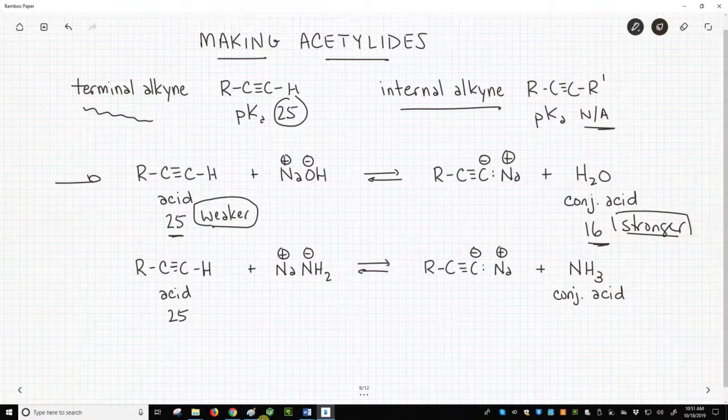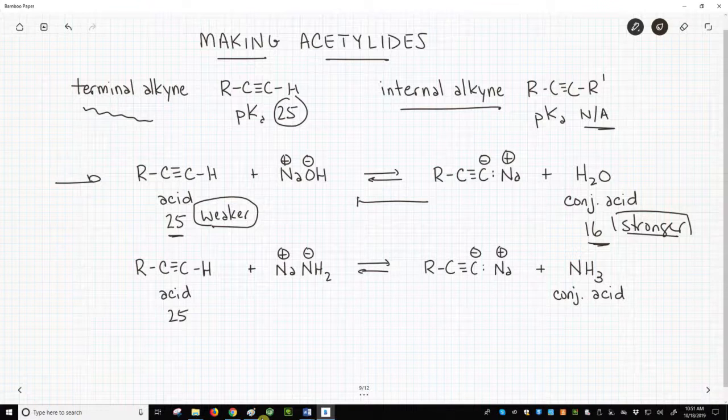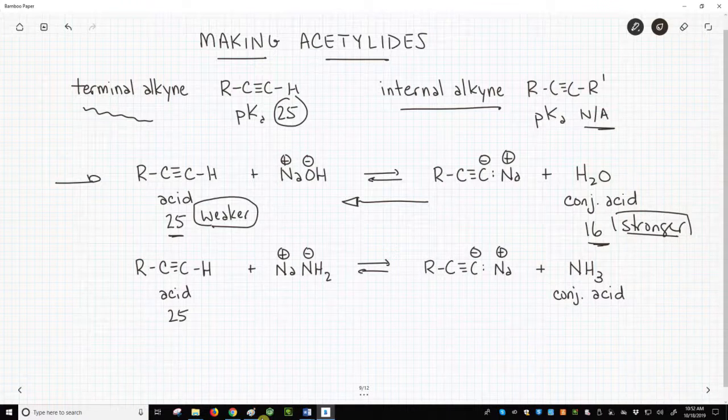The equilibrium of this reaction, like all acid-base reactions, favors going from the stronger acid to the weaker acid. That means we favor the alkyne. We're going to need a special base to deprotonate alkynes, and that base is called sodium amide.